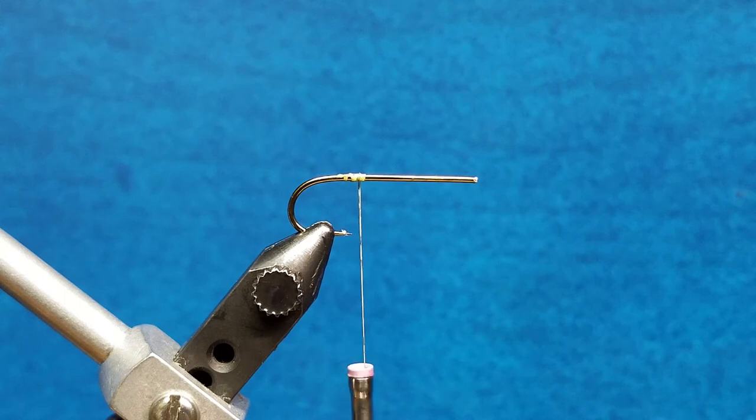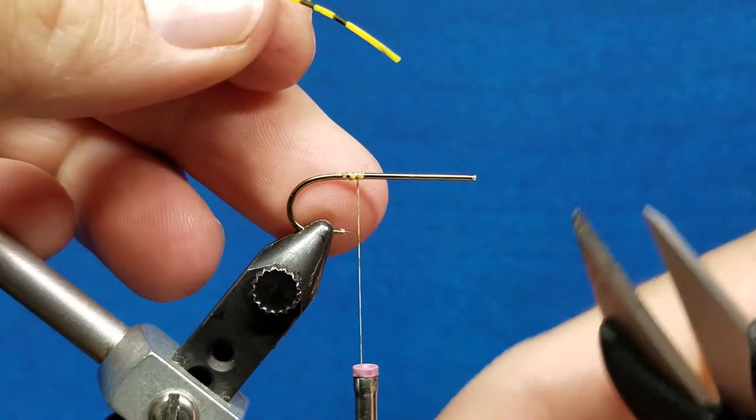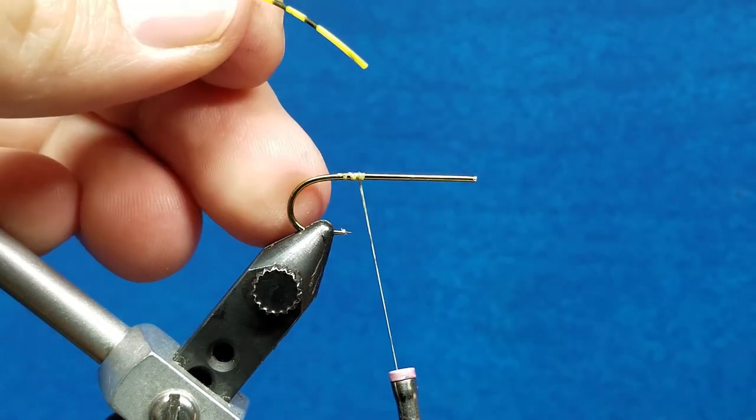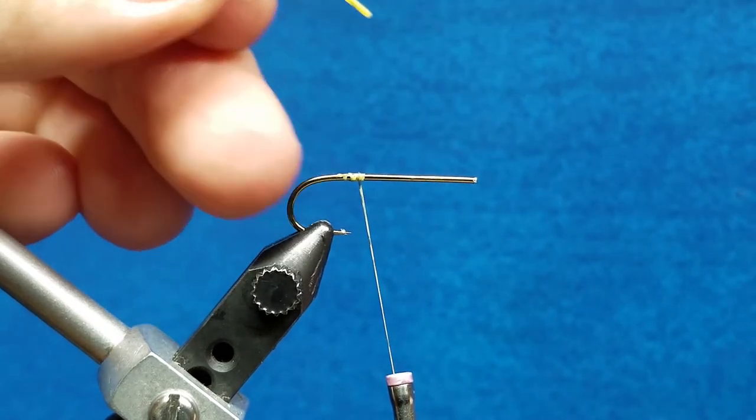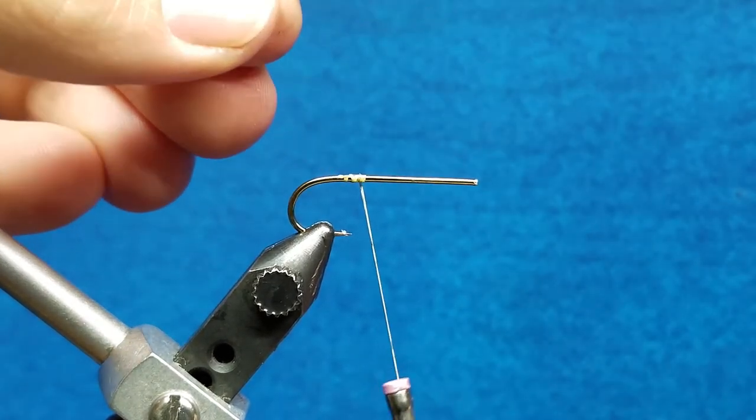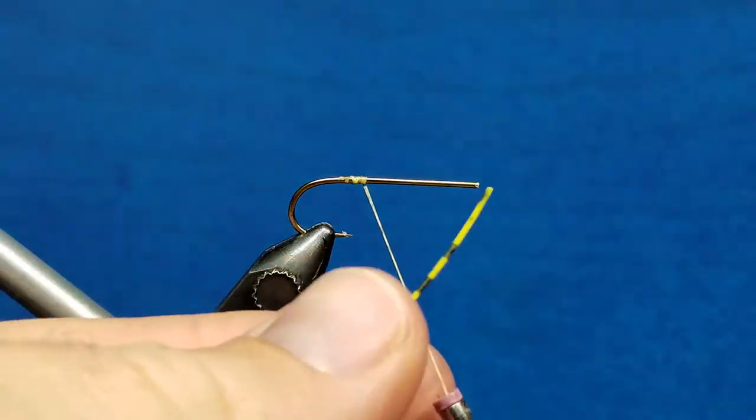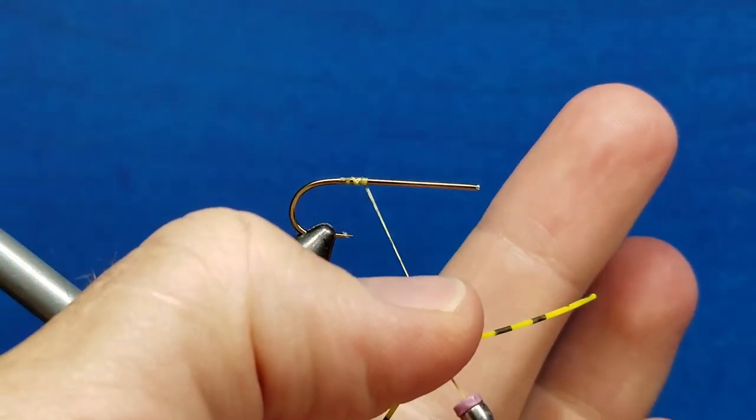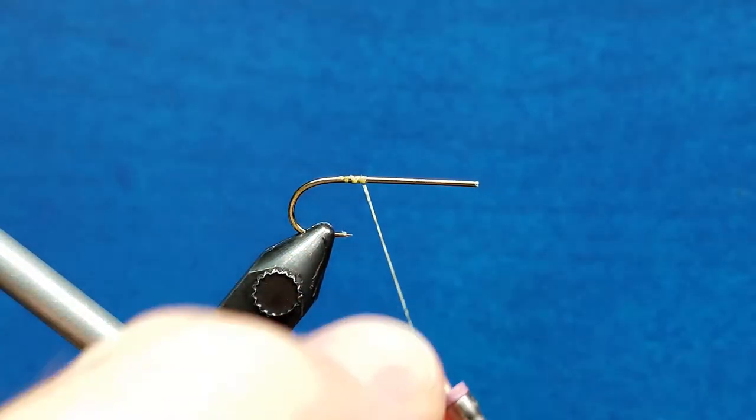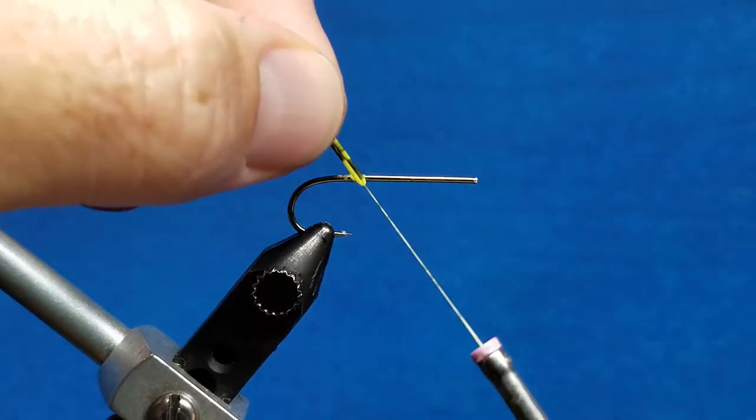There are several nymph patterns out there that use rubber legs material in the tail. Anytime I'm tying a tail with rubber leg material, I like to take that material and just straddle it over the thread and pull it down. This allows me to slide this right down to the tie-in point.